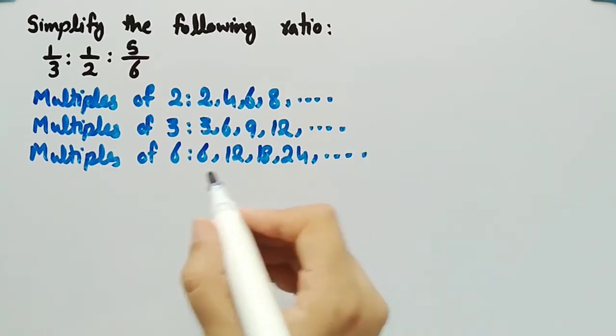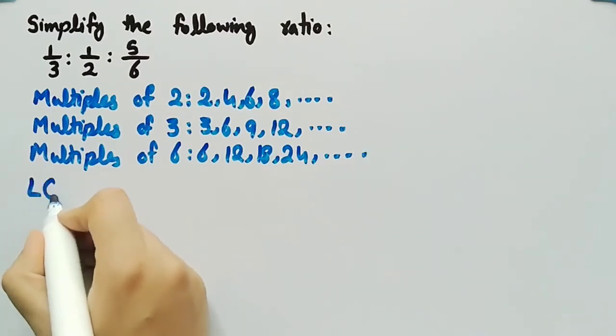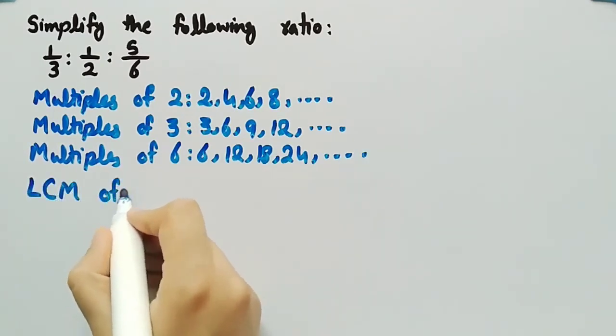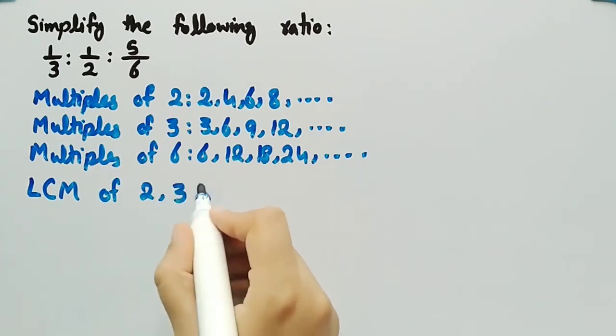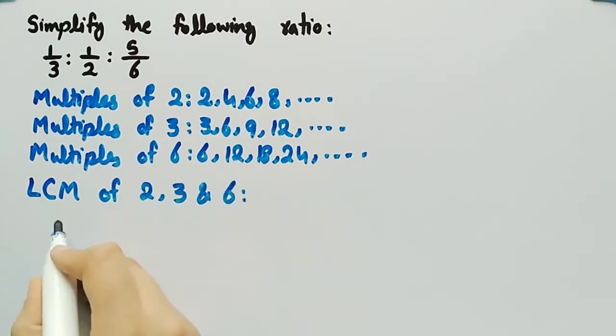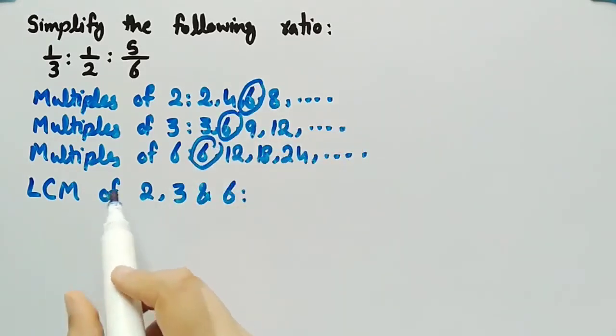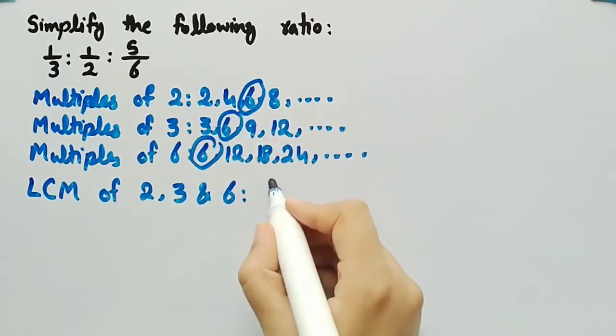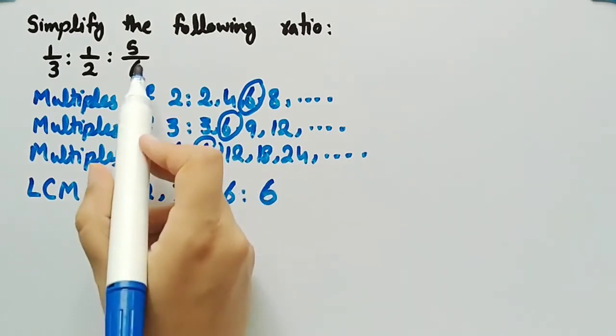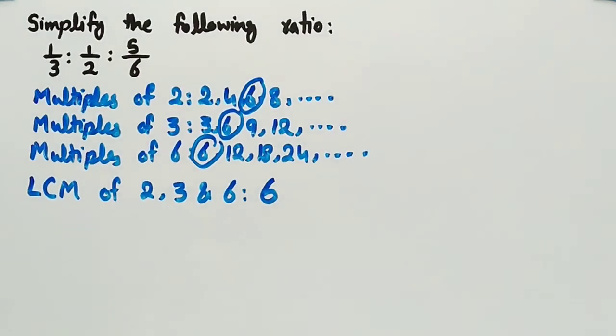Now let's see what are the common multiples. We have to choose the lowest common multiple or LCM of 2, 3, and 6. Their lowest common multiple is 6. So LCM of these three numbers is 6.